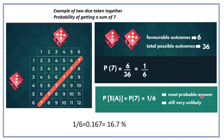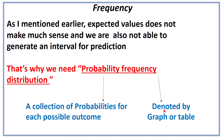1 by 6 is the most probable answer and still it is very unlikely — it has a probability of about 16.7% only. So why do we make frequency distribution tables? As mentioned earlier, expected values do not make much sense, and we are also not able to generate an interval for prediction. If we are predicting something, we cannot predict a sure-shot value; we give a range. That is why we need a probability frequency distribution — it is a collection of probabilities for each possible outcome, written in a table and sometimes denoted by a graph.